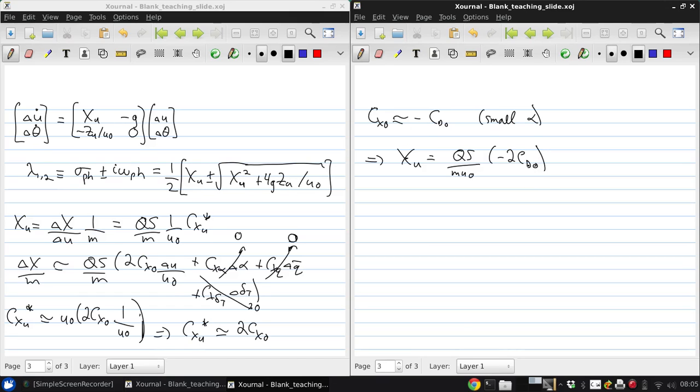Now there's sort of a tricky thing with notation here. Early in the course, we used CD naught to represent the zero-lift drag of an aircraft, whereas here in our stability analysis, remember that the subscript naught represents the trim state. So this is the aircraft drag coefficient at the trim state, not the zero-lift drag coefficient.